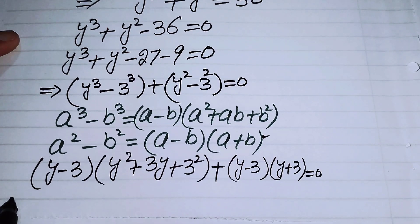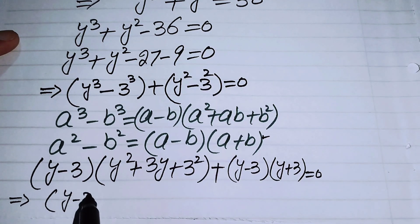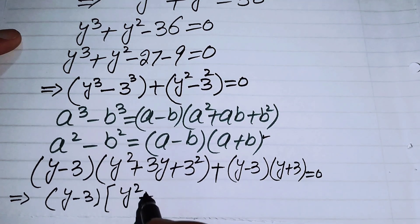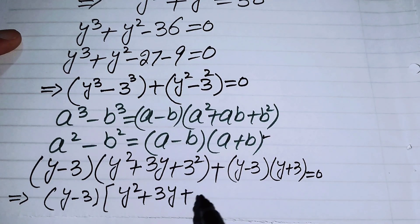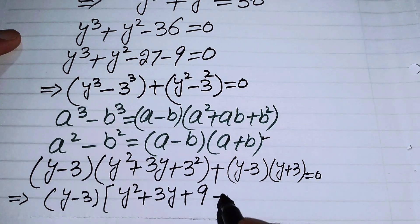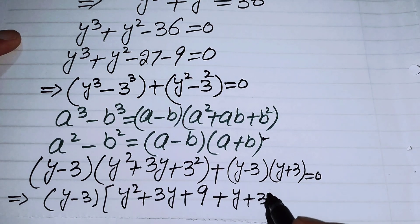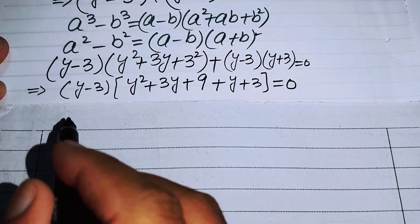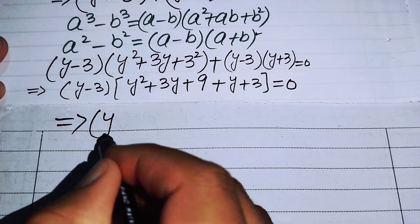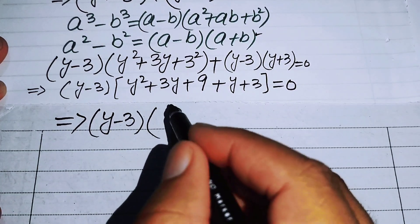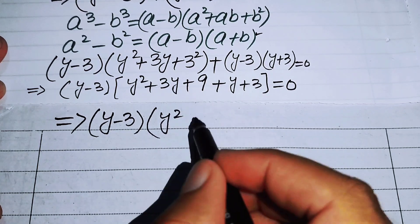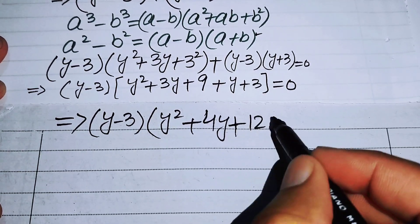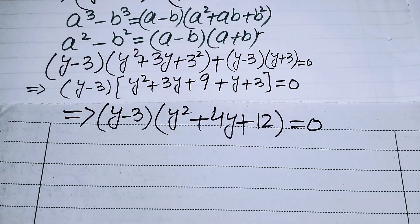We see that (y - 3) is a common factor in both terms. Factoring it out gives (y - 3)(y² + 3y + 9 + y + 3) = 0, which simplifies to (y - 3)(y² + 4y + 12) = 0.